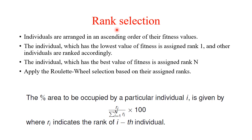Rank selection is another technique for parent selection. In rank selection, individuals are ranked based on their fitness values — arranged in ascending order, with the lowest fitness assigned rank 1 and the individual with the best fitness assigned rank N (the population size). After assigning ranks, a Roulette wheel or tournament method can be applied. The space each individual occupies on the Roulette wheel is proportional to Ri divided by the total rank, where Ri is the rank of the i-th individual.